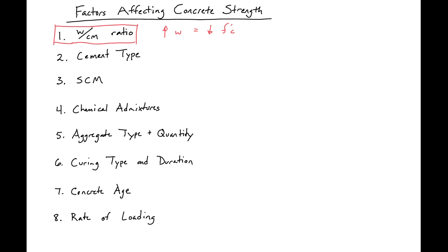The cement type is also going to affect the strength slightly, and it will also affect the rate at which the strength develops. For comparison, if you have a Type 1 cement versus a Type 3, a Type 3 is going to develop strength faster than a Type 1.